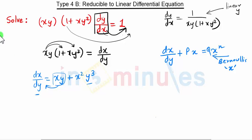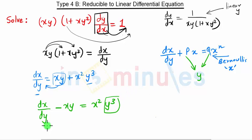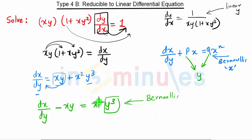As you can see, this equation is of that form. If I take the xy term to the left side, the equation becomes dx/dy − x·y = x²·y, where P and Q are functions of y. This term is our Q, and this will be our P.